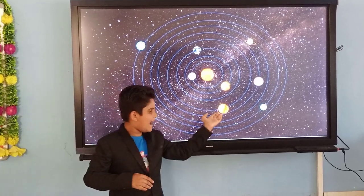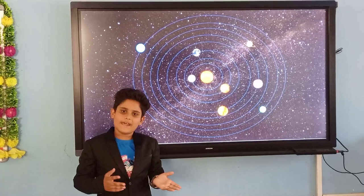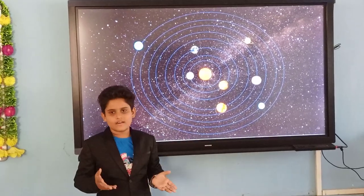Next is Mars. Mars is the fourth planet in the solar system. It is red in color.